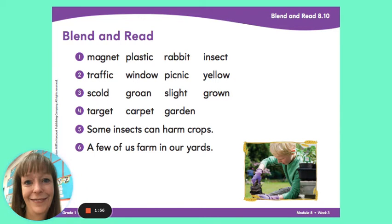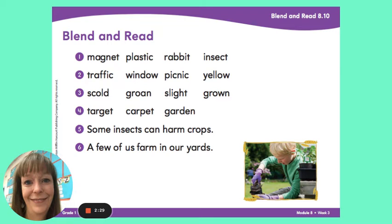Let's look at line two. Read it with me now. Traffic, window, picnic, yellow. What do you notice about these words? Once again, they are all long words, and they all have two syllables. Count them with me — traffic, window, picnic, yellow. Great job.